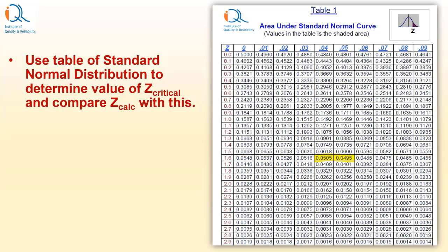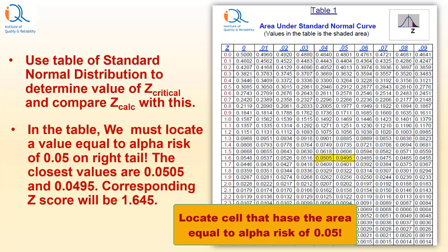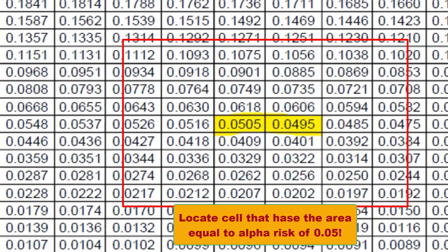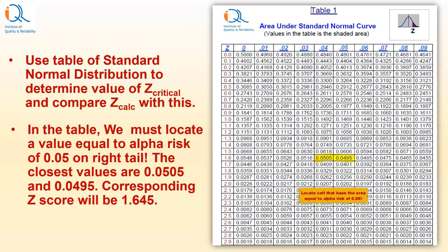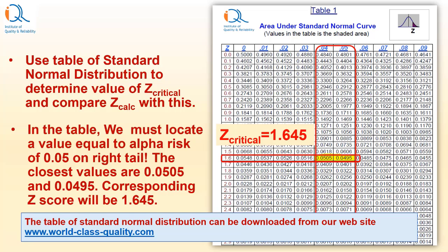Here is the table of standard normal distribution. In the table, we must locate a value equal to alpha risk of 0.05 on the right tail. The closest values in the table are 0.0505 and 0.0495, highlighted. The corresponding z score will be 1.645. So z critical value is 1.645. The table of standard normal distribution can be downloaded from our website www.world-class-quality.com.